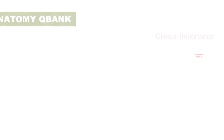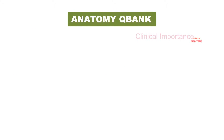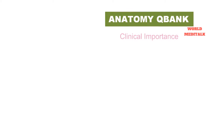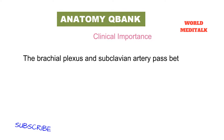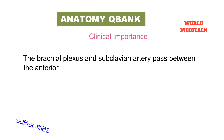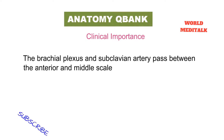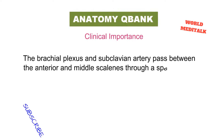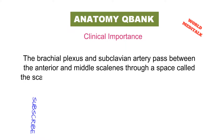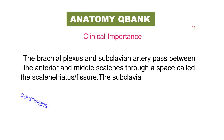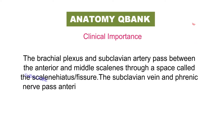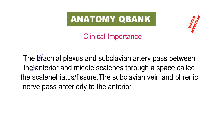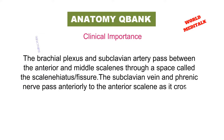The clinical importances are: the brachial plexus and the subclavian artery pass between the anterior and middle scalene muscles through the space called the scalene hiatus or fissure. The subclavian vein and phrenic nerve pass anteriorly to the anterior scalene muscle as it crosses over the first rib.